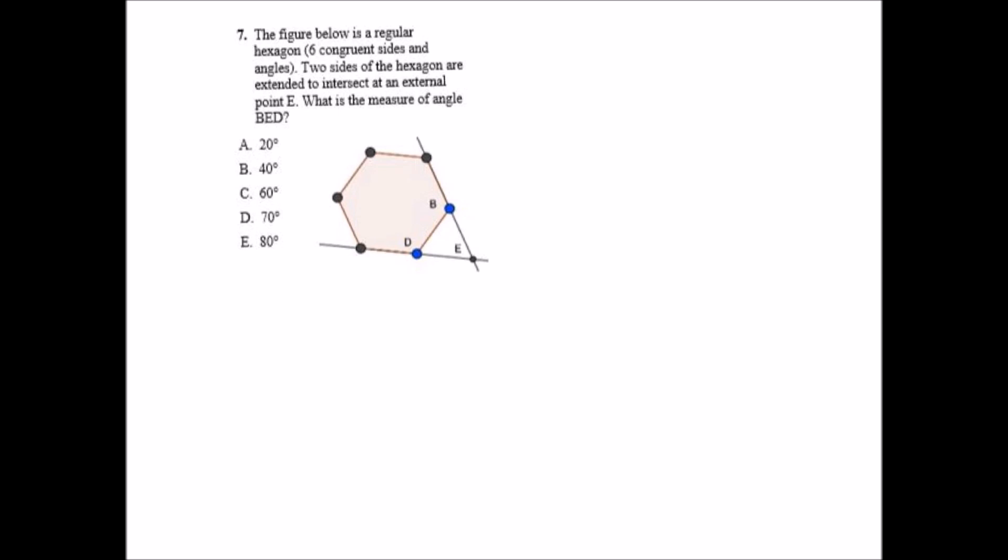Okay, the figure below is a regular hexagon, so it's got six congruent sides and angles. Two sides of the hexagon are extended to intersect at an external point E. It wants to know what is the measure of angle BED.